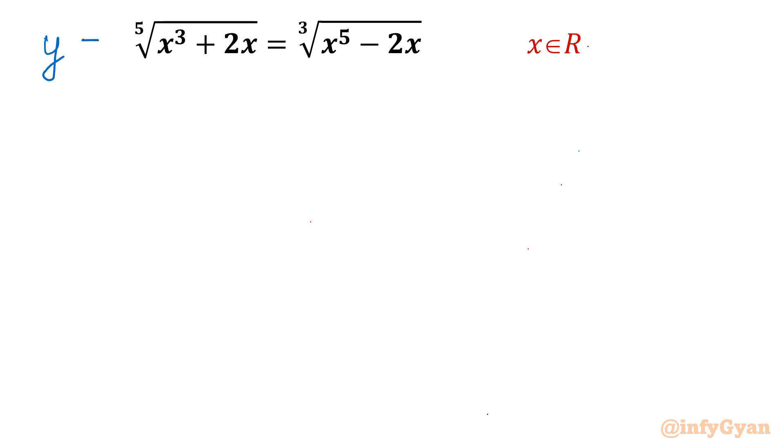So what I am going to consider, I will consider the given equation is y. After that I will frame one system of equations. Now equation becomes y is equal to 5th root of x cube plus 2x. This is our first equation. And second equation we can write y is equal to cube root of x power 5 minus 2x.